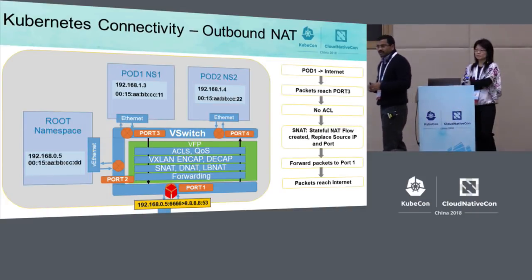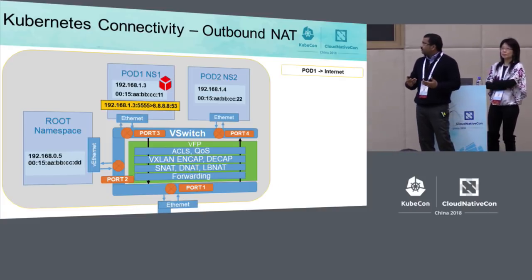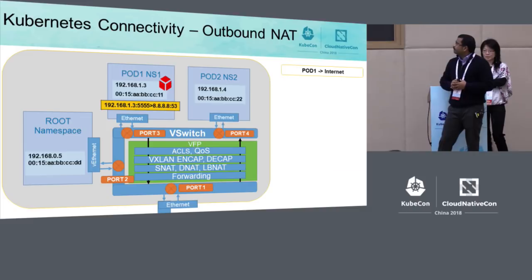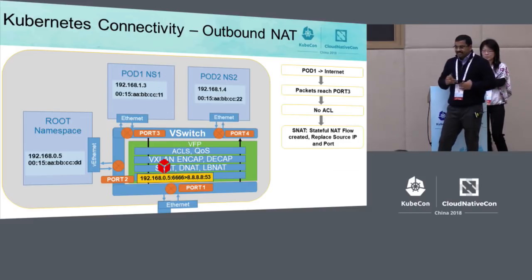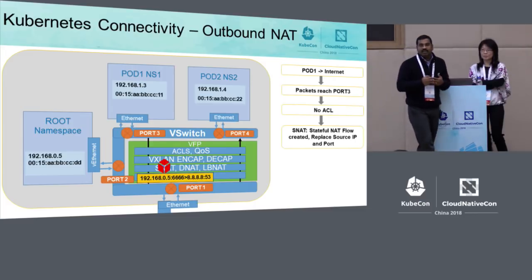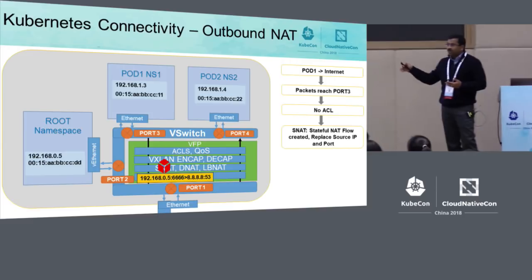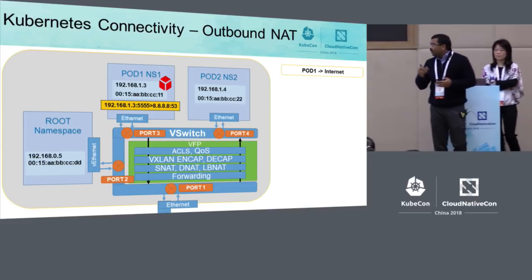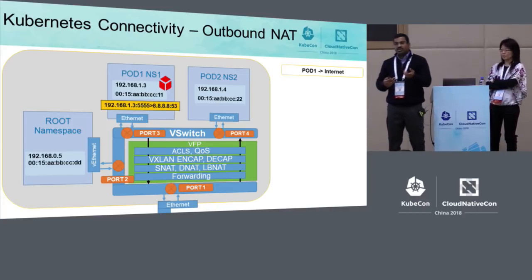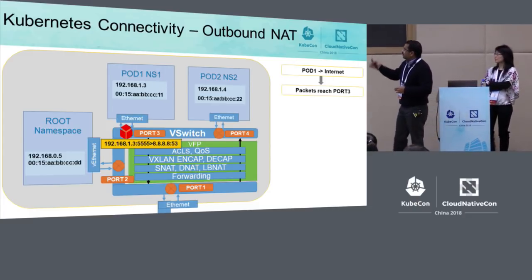The second example is a pod trying to reach internet traffic. By default, every traffic coming out of the pod will be outbound NATed. The packet from pod1 reaches the VFP port, no ACL is applied, and it hits the SNAT layer — stateful SNAT is created. The source IP and source port of the container are replaced with the host IP and port, and traffic gets forwarded to the external port and out to the internet. When the response comes back, the stateful NAT allows us to reverse it — rewriting host IP:port back to container IP:port. That's pod-to-internet.